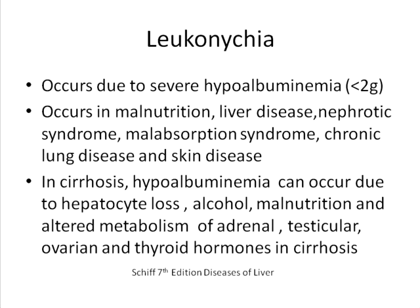Leuconychia is seen in patients with severe malnutrition and liver disease. In addition, it can occur in nephrotic syndrome, where protein is lost through the kidneys; malabsorption syndrome, where protein is lost through the intestines; chronic lung disease, where protein is lost through sputum; and occasionally in skin diseases like psoriasis, where protein is lost through the skin.